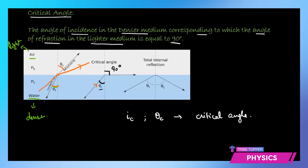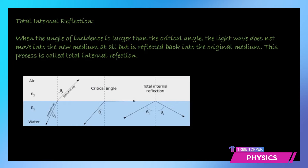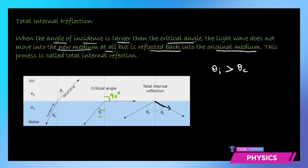The next thing we are going to talk about is total internal reflection, which is based on the critical angle. When the ray falls at an angle equal to the critical angle, the angle of refraction is 90 degrees. Now what if I still increase the angle of incidence beyond the critical angle? It was already at 90 degrees, so the ray will simply get reflected back into the same medium. When the angle of incidence is larger than the critical angle, the light wave does not move into the new medium at all and simply gets reflected back into the original medium.